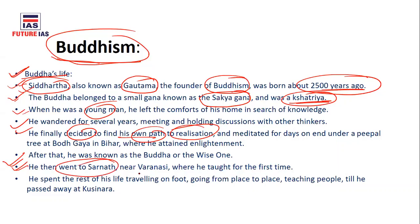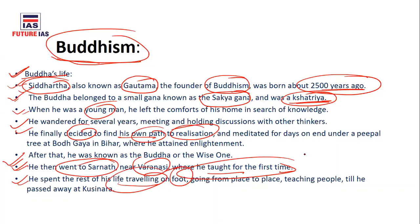After attaining enlightenment, Buddha went to Sarnath near Varanasi, where he taught for the first time. For the rest of his life, he traveled on foot from place to place, teaching people and spreading enlightenment until his death. He died at Kushinara. He was the founder of Buddhism.